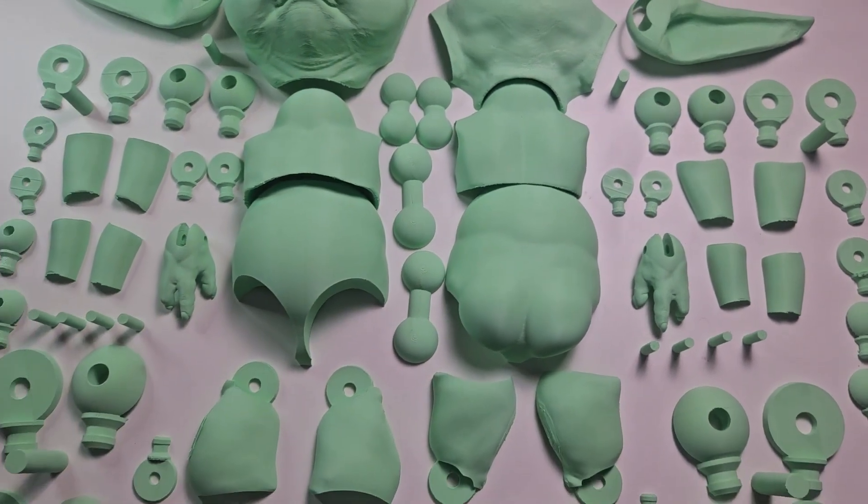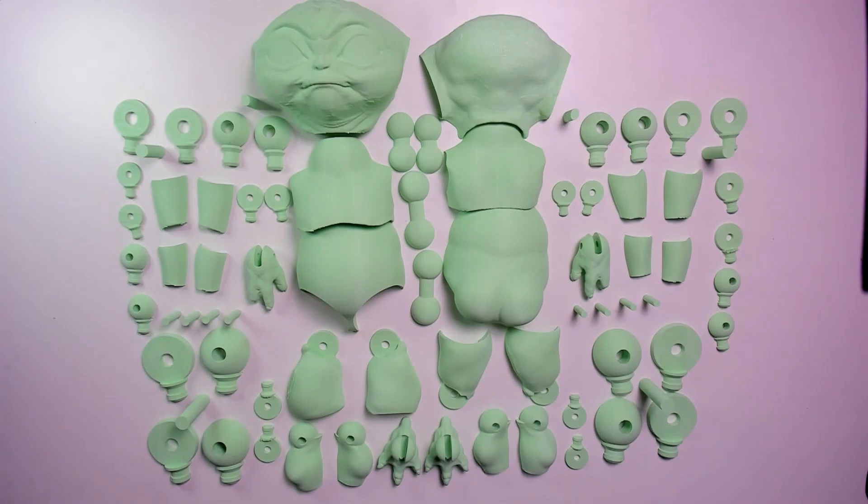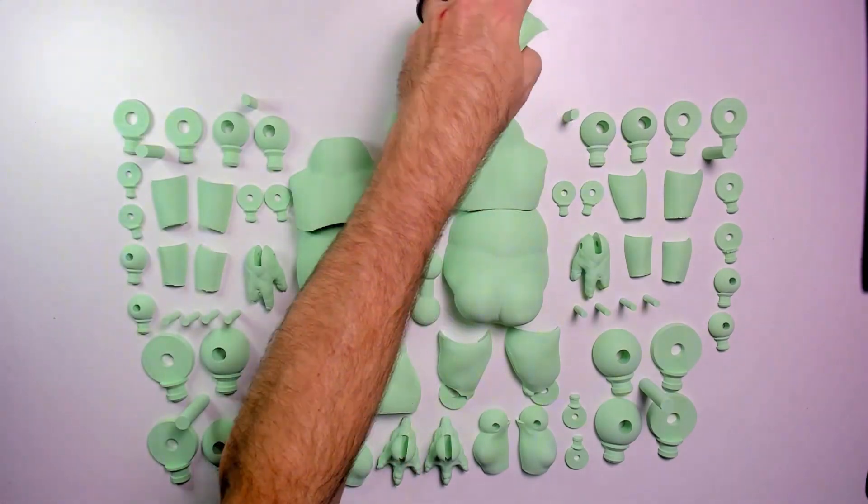As I mentioned, most parts will be hidden by Grogu's clothing, so I will assemble everything except for the head, ears, hands, and feet. I'll put those aside to be finished and painted later.